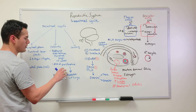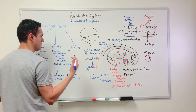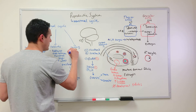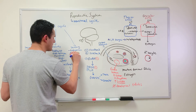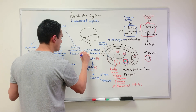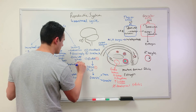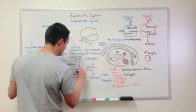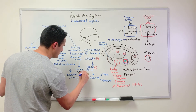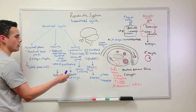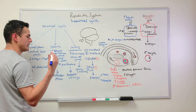Once we move on to the secretory phase, this is when the endometrium is going to have a high blood supply. We're going to have elaborated glands within the endometrium, and this blood supply and these glands are getting elaborated here.